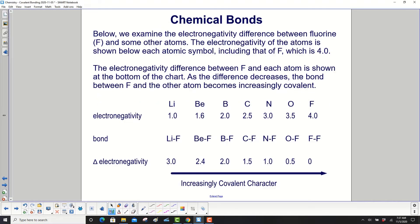Below, we examine the electronegativity difference between fluorine, which is represented by F, and some other atoms. Here's fluorine over here. The electronegativity of the atoms is shown below each atomic symbol, including that of fluorine, which is 4.0, right over there. So lithium here, it would be 1.0.